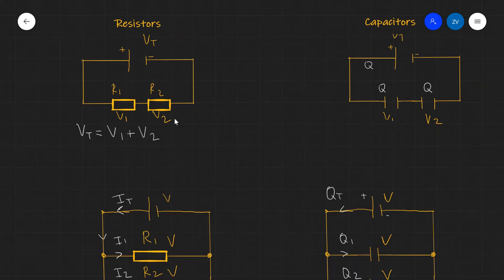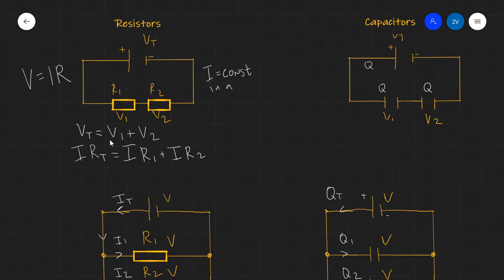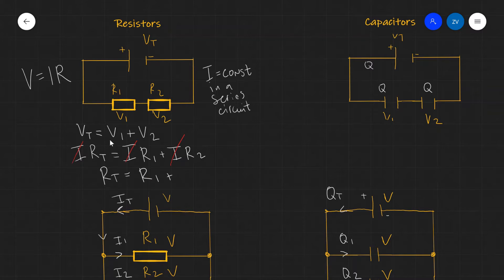Remember, in all electrical circuits, V is equal to IR, which is Ohm's law. This means I can rewrite Kirchhoff's second law as I times R total equals I times R1 plus I times R2. Remember though, the current is constant in a series circuit, so we can cancel out the I's. What we're left with is the formula for adding two resistors in series: R total equals R1 plus R2.